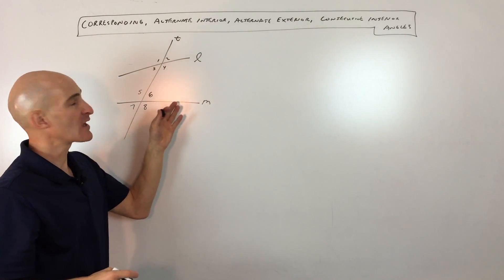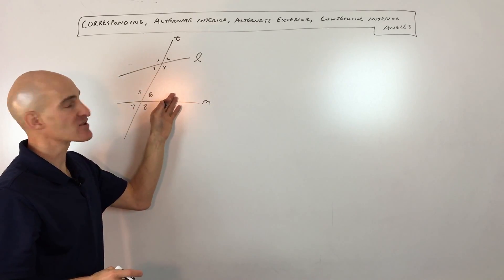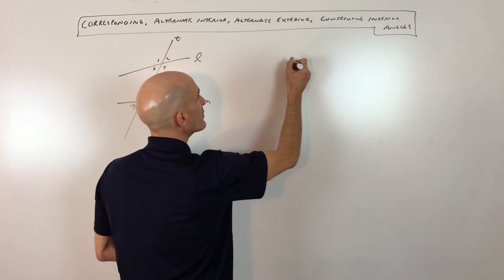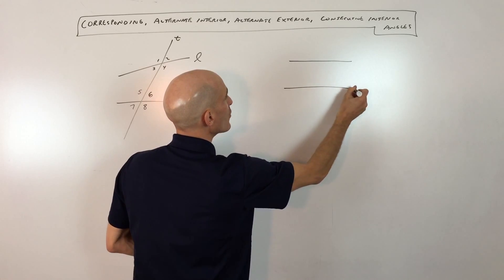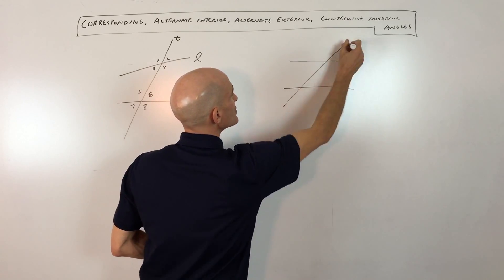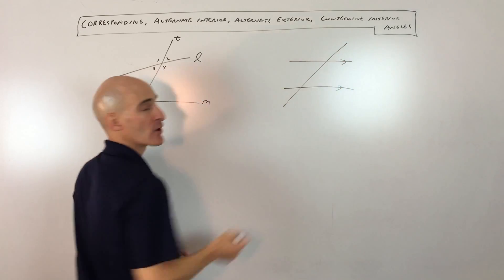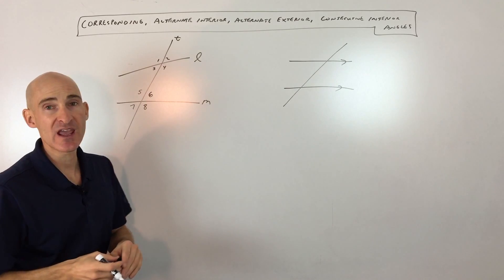Now, we're going to look at two different scenarios here. Here you can see the lines are not parallel, but we're going to look at when the lines are parallel as well. So let's just say that these are parallel — we're going to look at what happens. But first of all, let's just talk about the names.